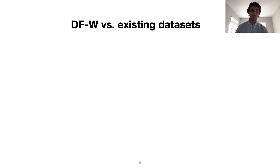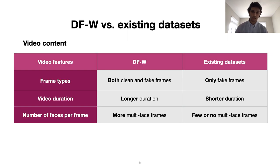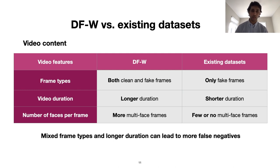Next, we looked into video content as a point of difference. First, in all research datasets, every frame in the video contains fake content. In DFW, however, we found many cases where only a fraction of the frames contains fake content. Second, we observed that DFW videos are generally longer than those in existing datasets. These two features combined can potentially result in more clean content in each video, which implies that performing detection at the video level might be problematic.